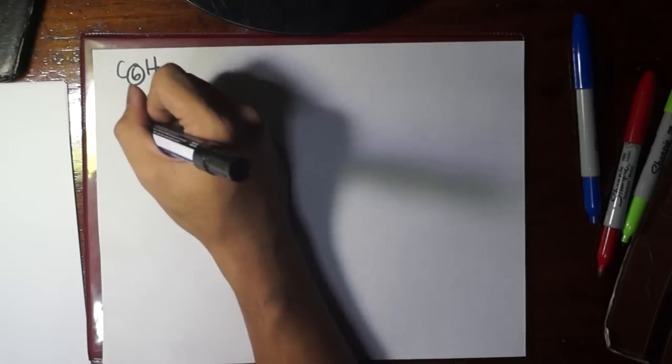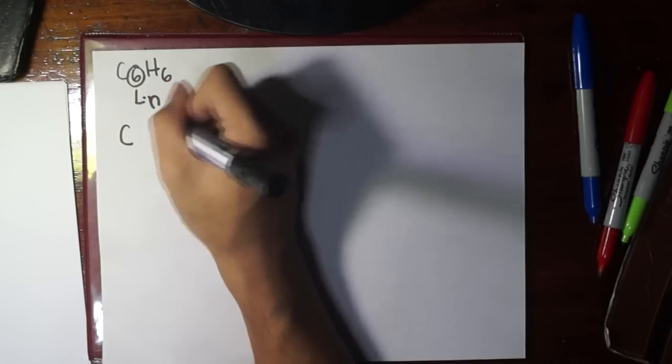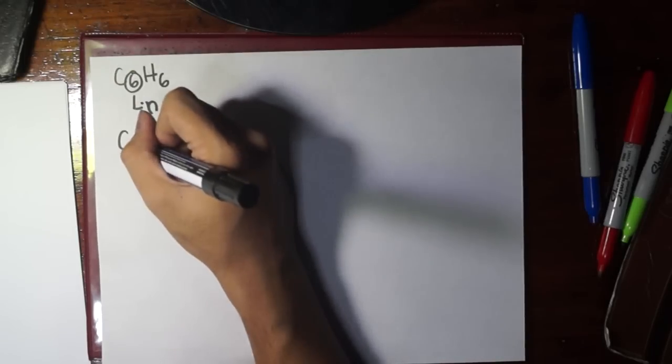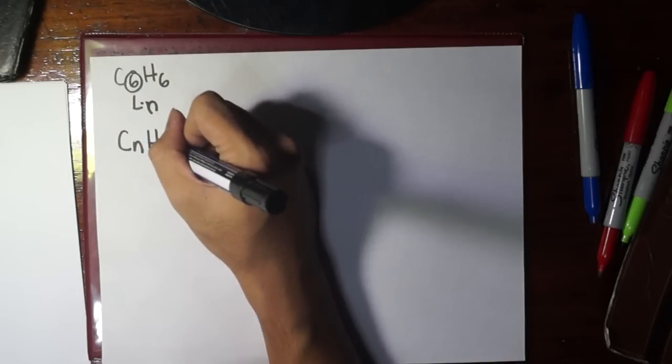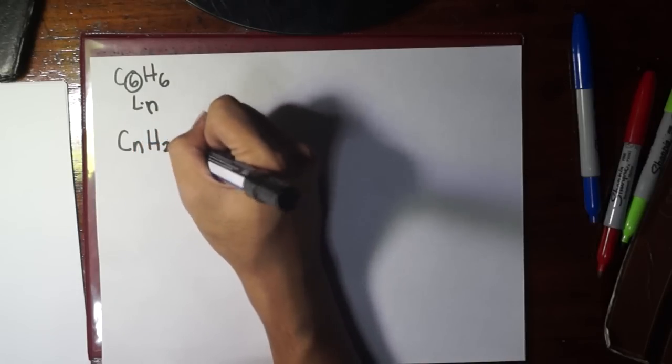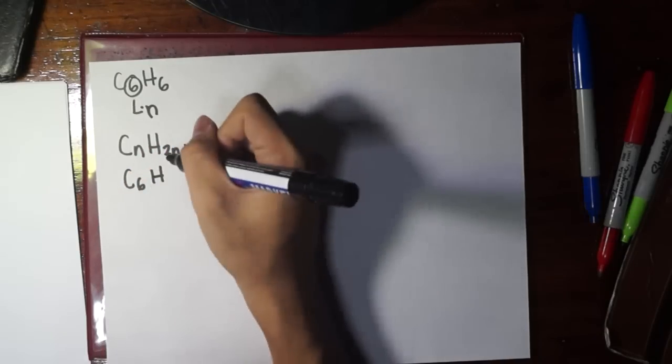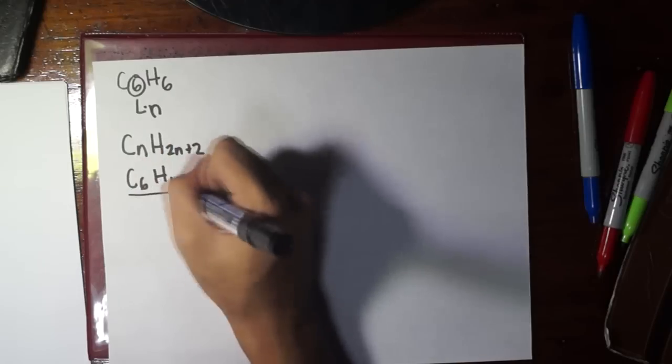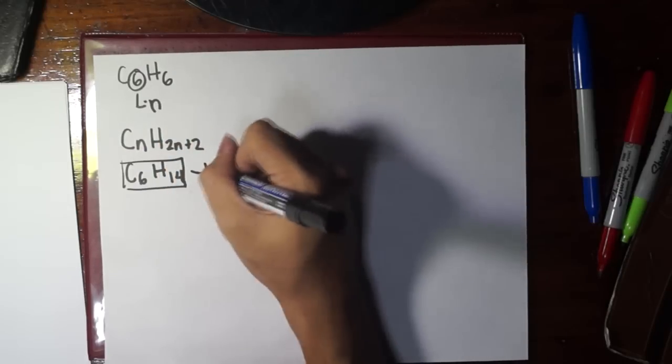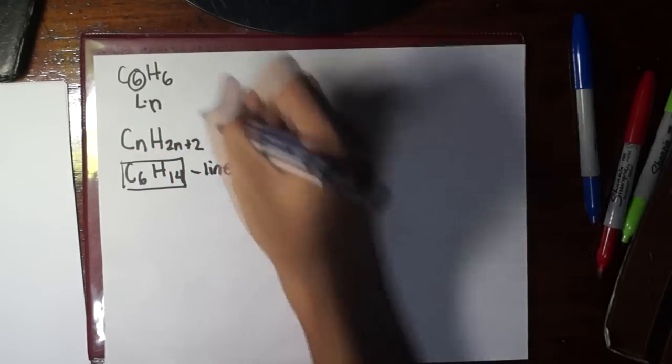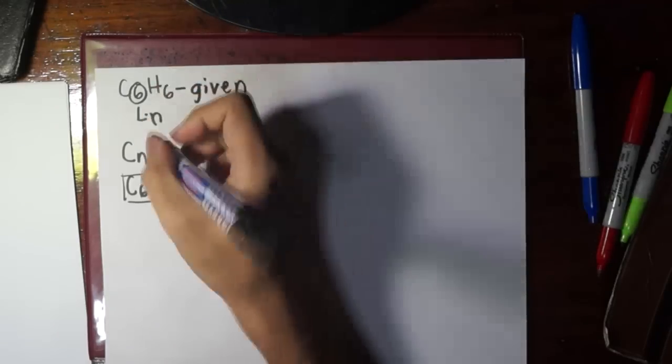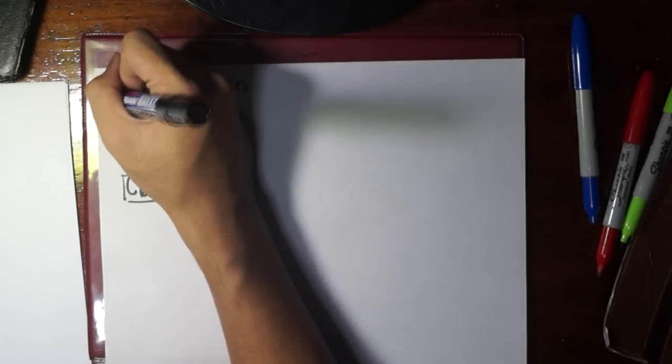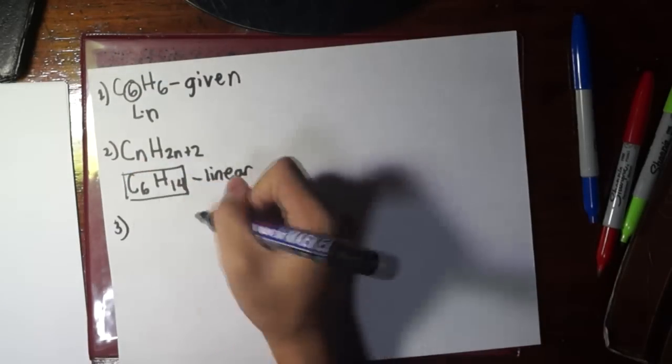The second thing you have to do is get n and calculate the formula of the linear alkanes with this number of carbons. Since n here is 6, linear alkanes should have CnH2n+2, so 6 times 2 plus 2 is 14. This is C6H14, the formula for the linear alkane.